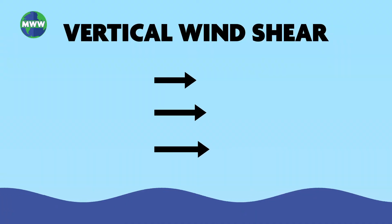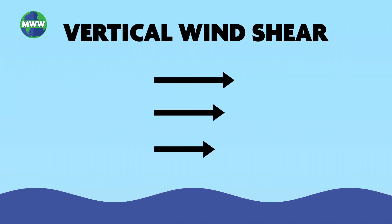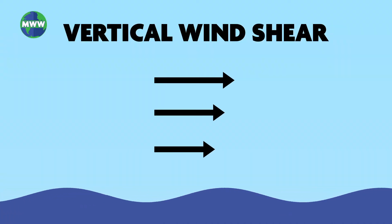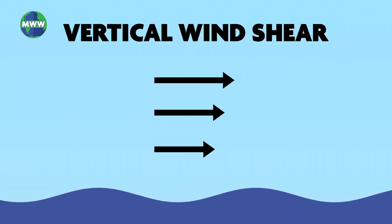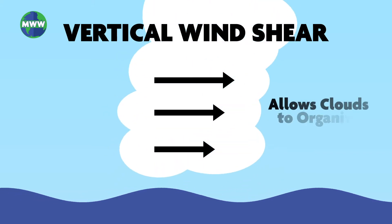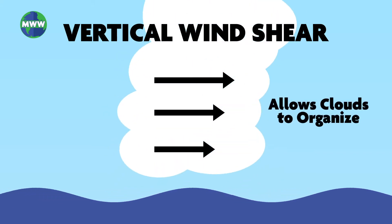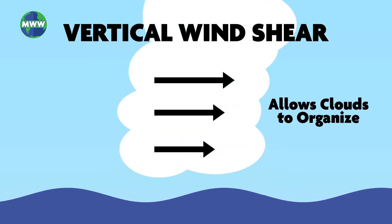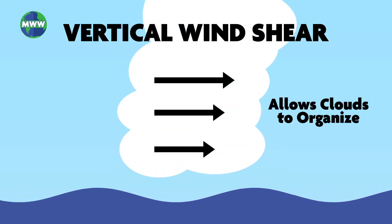Low values of vertical wind shear, or the change in wind speed with height, is another important part in the formation of a tropical cyclone.